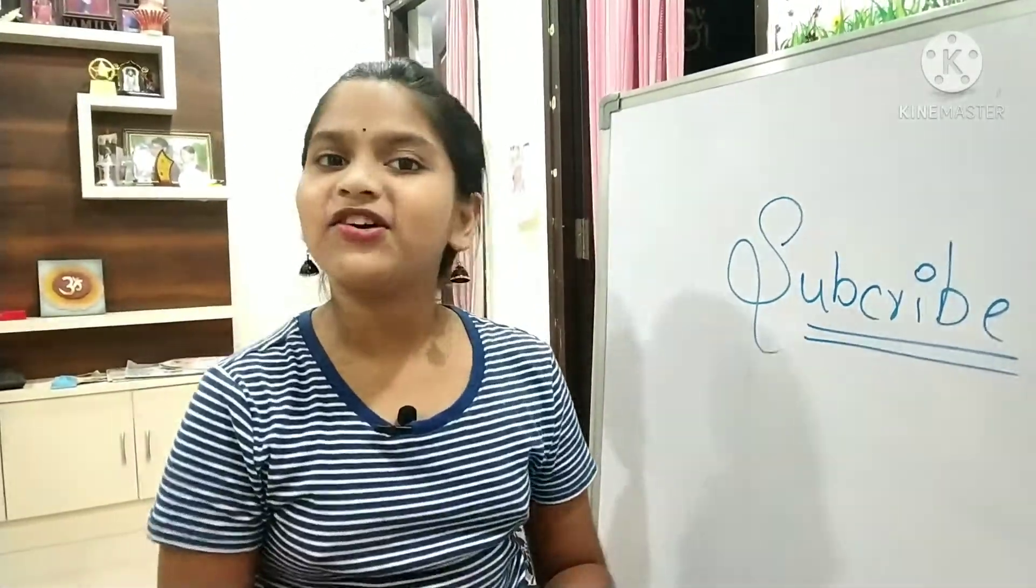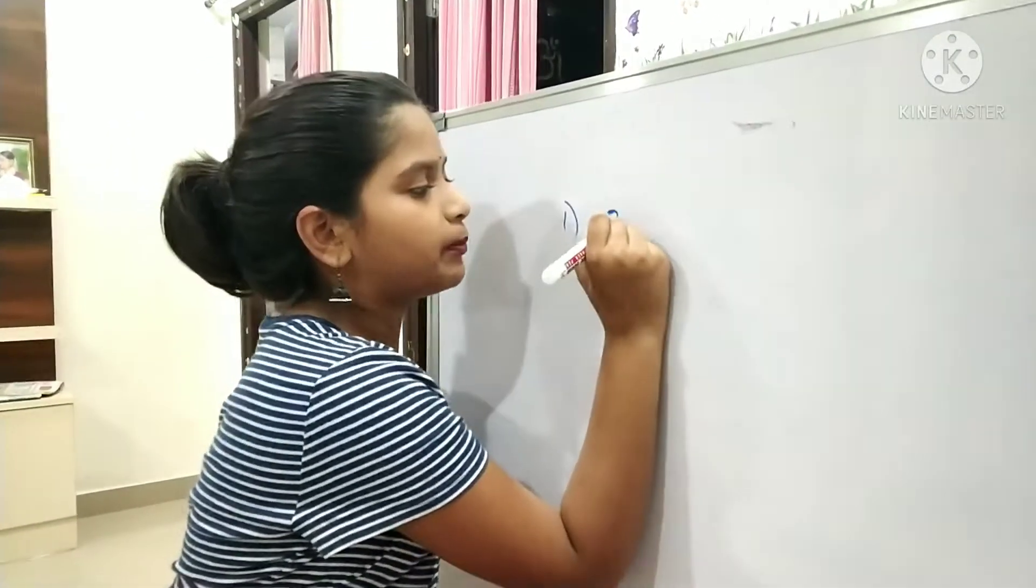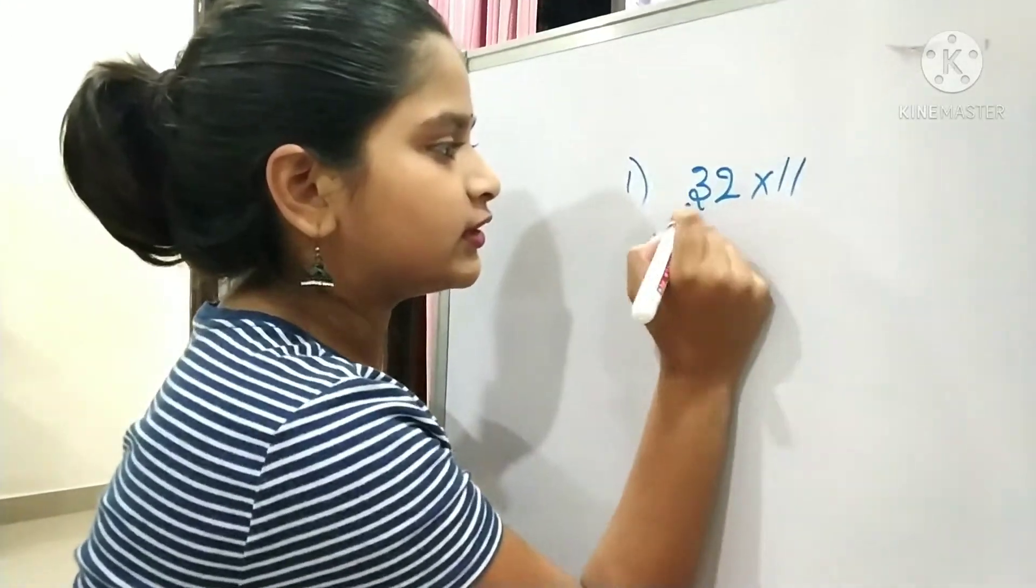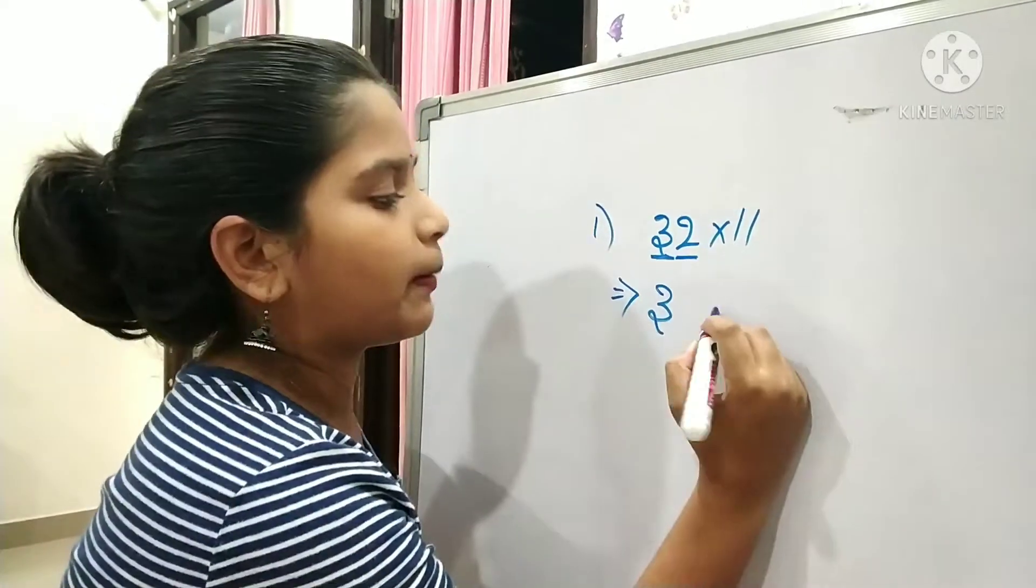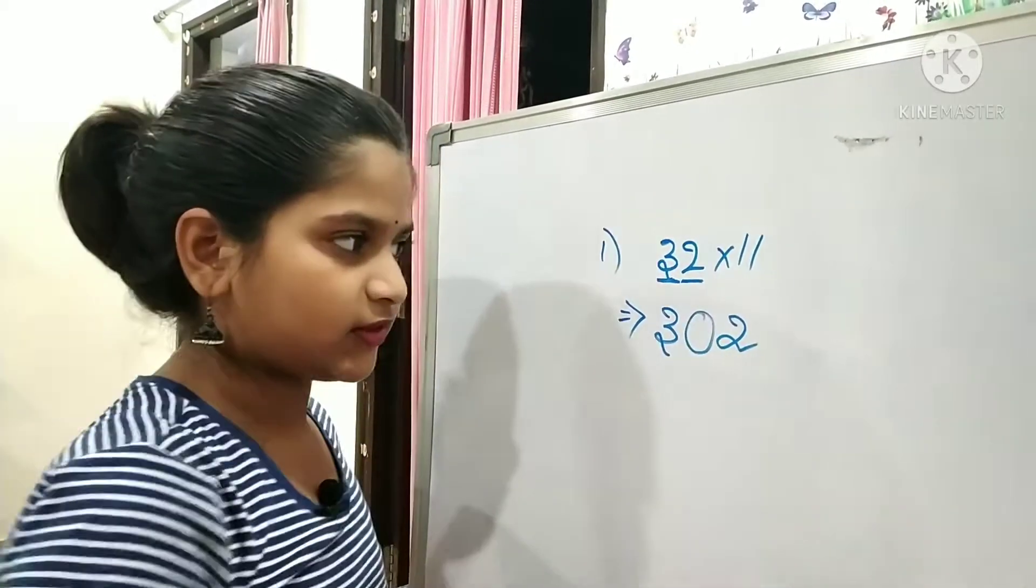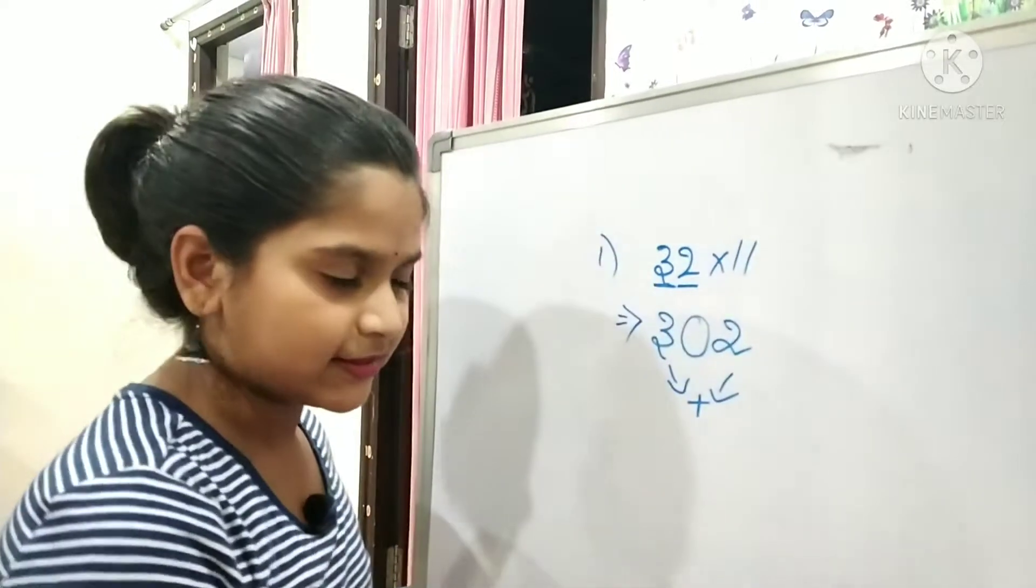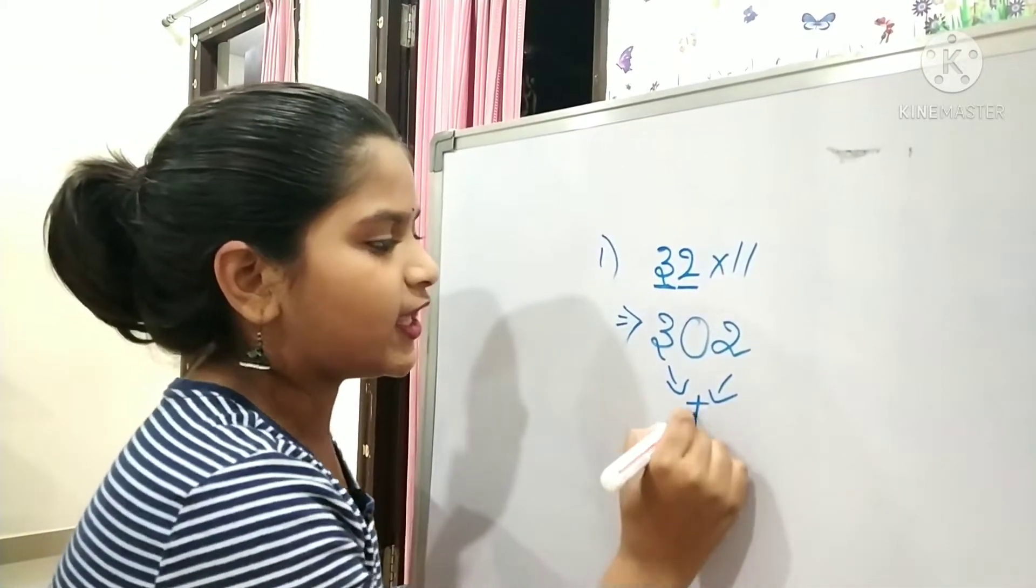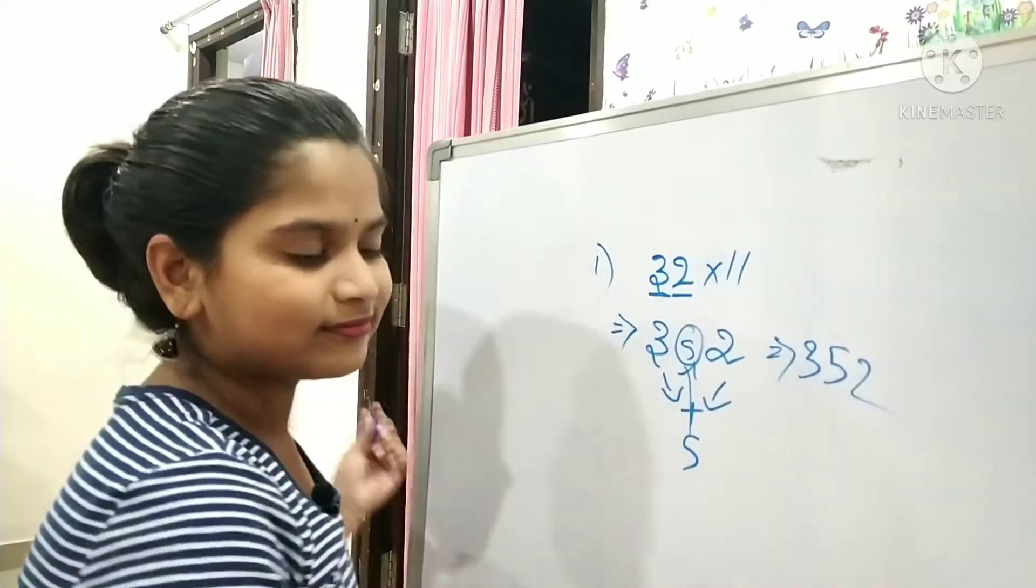The first problem is how to do multiplication of 32 times 11. All you have to do is take the 3 and place it at the start, and take the 2 and place it at the ending digit. What do we have to do to get the middle digit? Take 3 and 2 and add them together - you'll get 5, right? 3 plus 2 is 5. So take the 5, carry it up, and the answer is 352.